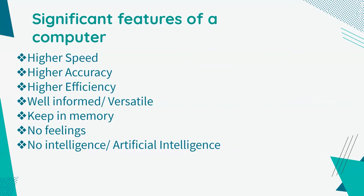Because of this feature of versatility, today computers are being used almost everywhere like schools, colleges, hospitals, offices, railway stations, hotels, and more. The next feature is the ability to keep in memory. Power of remembering is also a very special characteristic of a computer. You can store many types of information and data on your computer in very large quantities. Whenever you need this data in the future, you can retrieve it in a few seconds. This is called the feature of keeping memory.